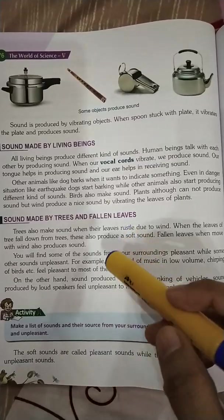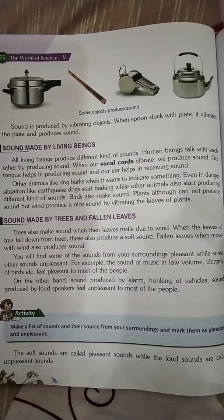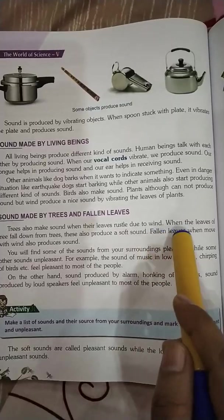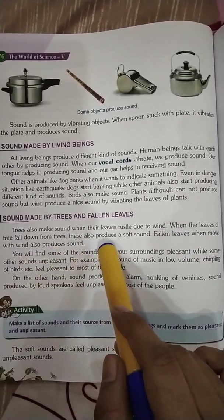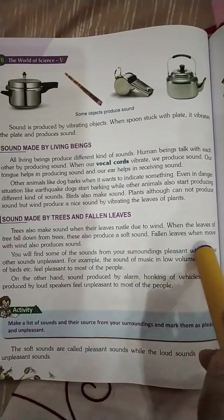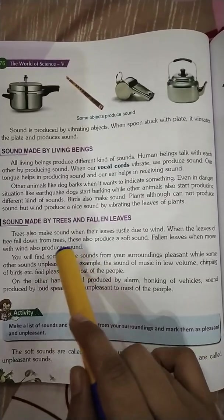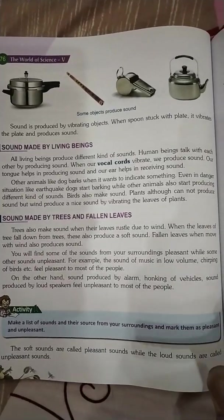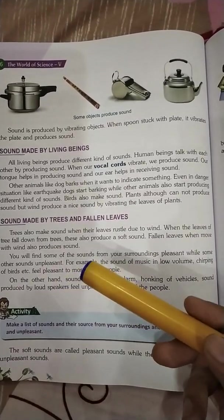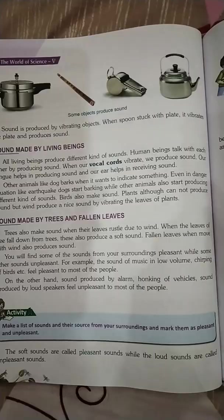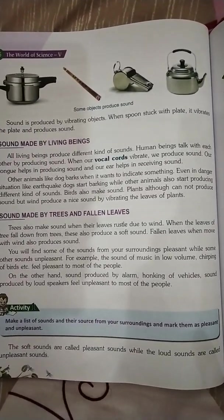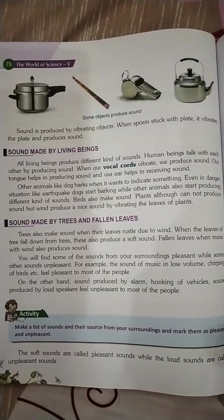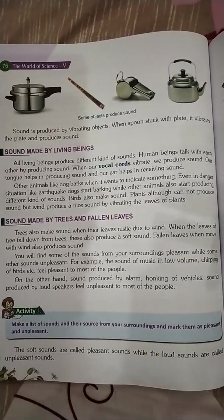Sound made by trees and fallen leaves: trees also make sound when their leaves rustle due to wind. When the leaves of a tree fall down from trees, they also produce a soft sound. Fallen leaves, when moved by wind, also produce sound. درخت بھی آواز نکالتے ہیں جب پتے ہوا سے ہلتے ہیں۔ گرتے ہوئے پتے soft sound نکالتے ہیں، اور جب ہوا تیز چلتی ہے تو پتوں کے ہلنے کی آواز آتی ہے۔